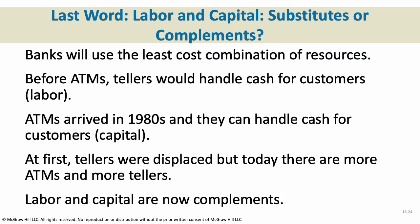Banks generally use the least-cost combination of resources. ATMs only came about in the 1980s — before them, tellers handled cash for customers and were a fairly expensive labor resource. ATMs came out in the 80s and can handle cash for customers. An ATM is a capital good — a machine — doing the work of a bank teller, which is labor. Modern ATMs can do nearly all the work of a bank teller: deposits, bill payments, withdrawals. At first, tellers were displaced, but today there are more ATMs and more tellers, and you could argue labor and capital are now complements.